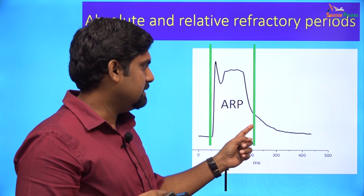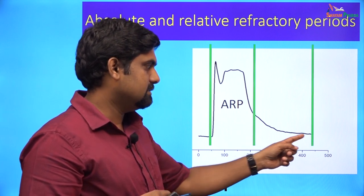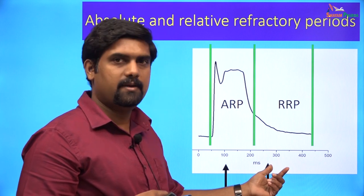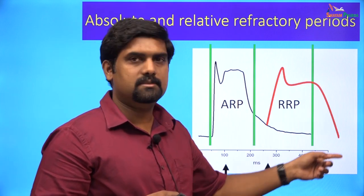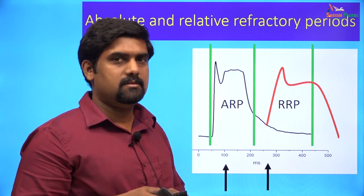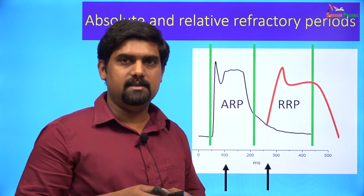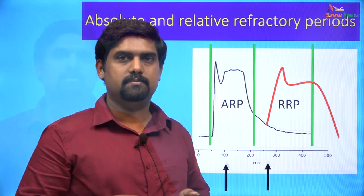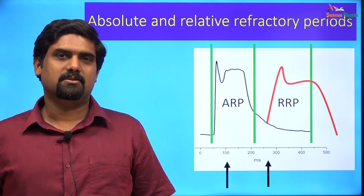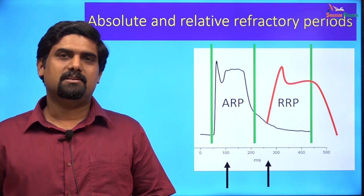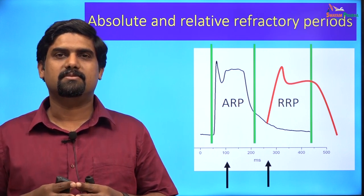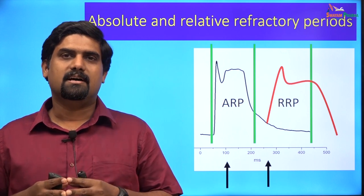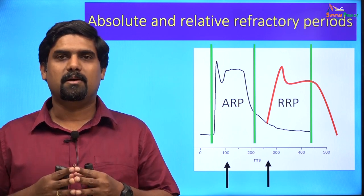The relative refractory period extends from the second half of the delayed repolarization phase until the end of the repolarization phase. During this period, if a stronger stimulus is provided, the cell may produce a second action potential, because some sodium channels recover from inactivation and can open again. The long refractory period of the heart prevents tetanic contractions. Tetanic contraction would cause the heart to go into a state of sustained contraction without relaxation. Relaxation is important for the pumping function of the heart because during relaxation the heart fills with blood, which is then pumped out during contraction.